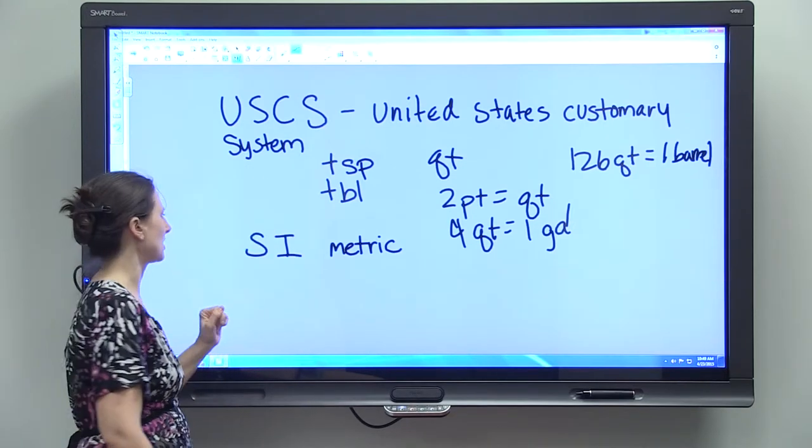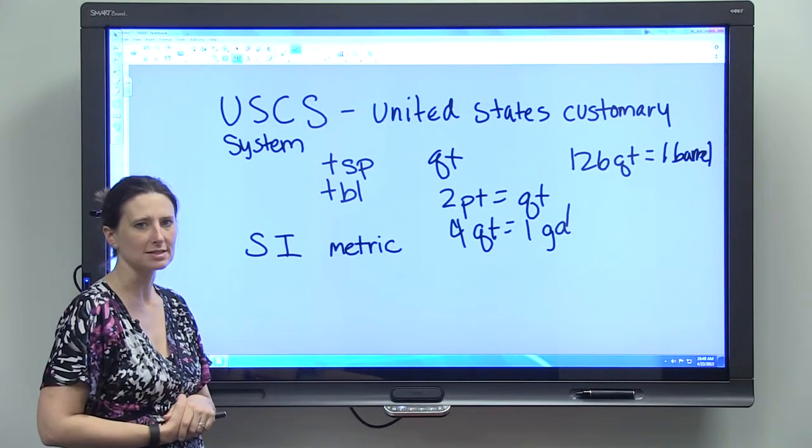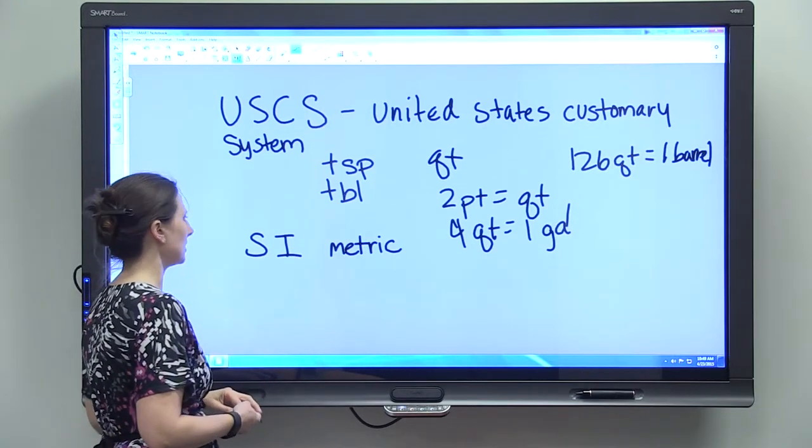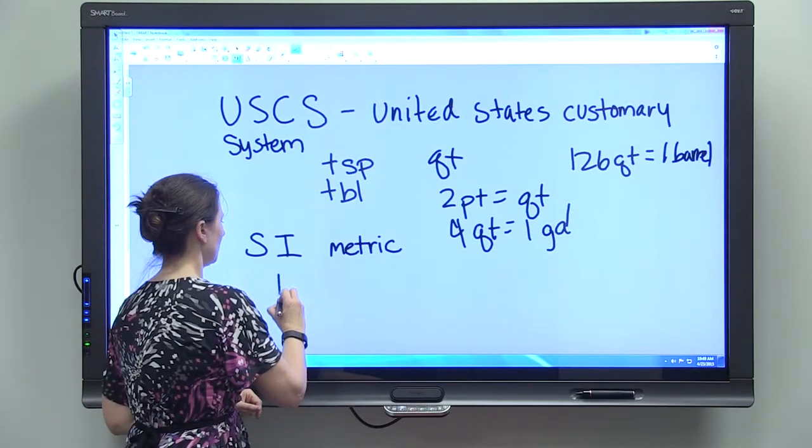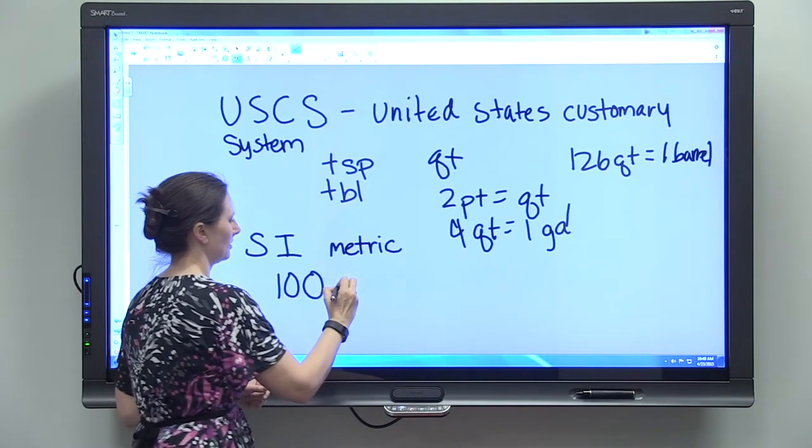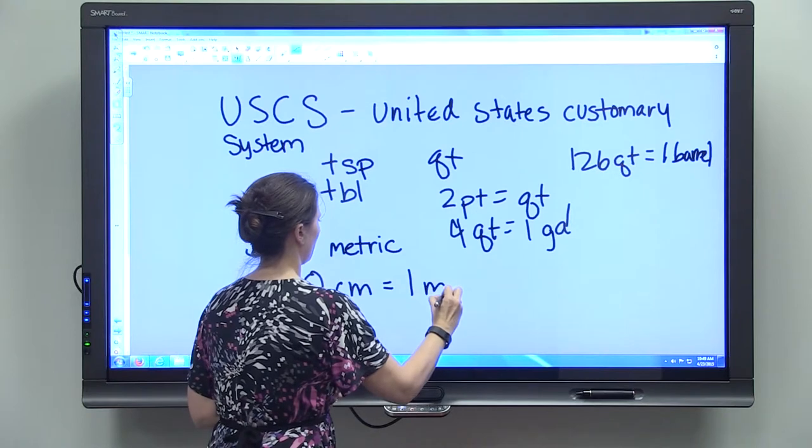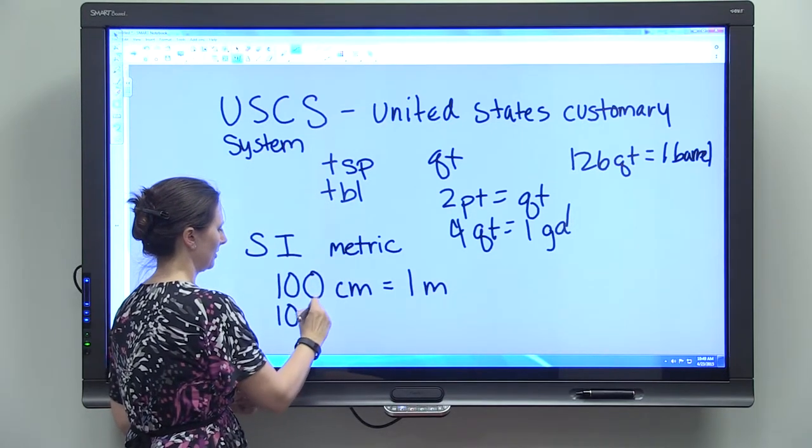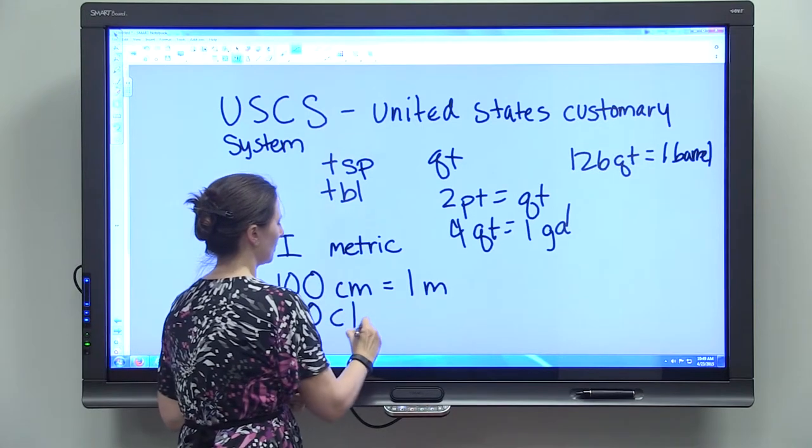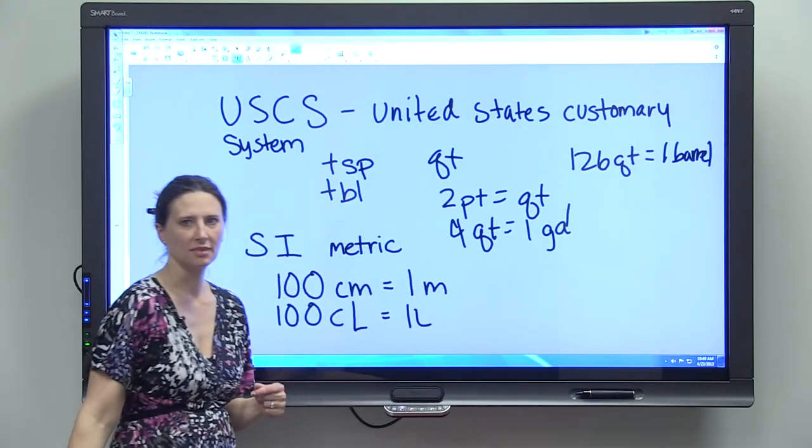In the metric system, we'll talk a little bit about metric prefixes in another lesson, it's much more systematic. You have 100 centimeters in one meter, you also have 100 centiliters in one liter. So it's much more systematic.